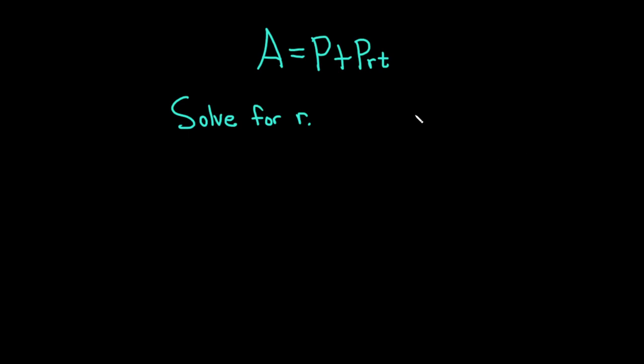In this video, we're given the equation for simple interest, which is A equals P plus PRT. A is the amount after T years. P is called the principal, so it's how much money you start with. R is the interest rate in decimal form, and T is the time in years.